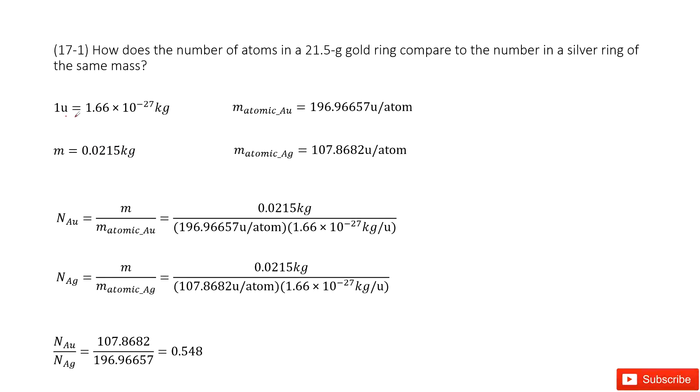We know one U equals a very small number in kilograms. Because atoms are small, we introduce this new unit to make our calculations easy. If we know the U, we know it's a new unit for kilograms, or for mass.